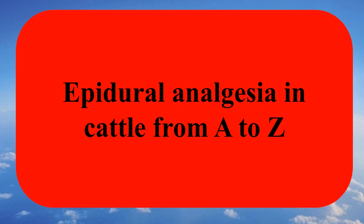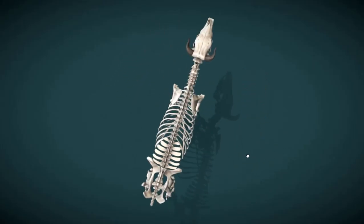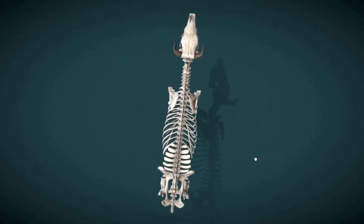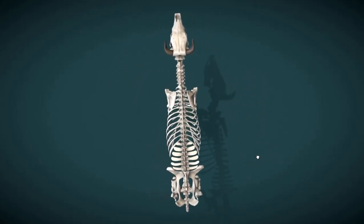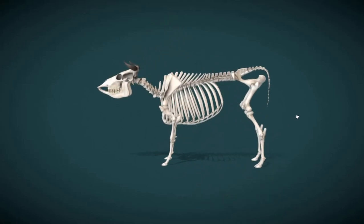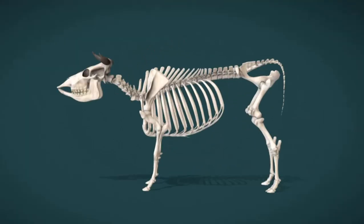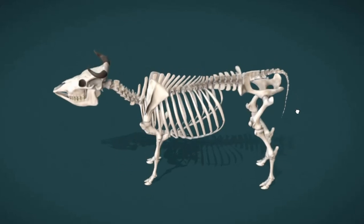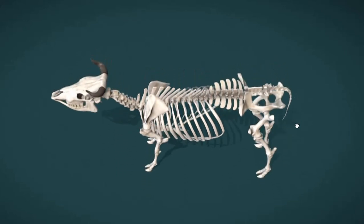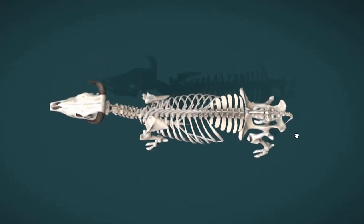Our topic today is epidural analgesia in cattle. At the beginning, we have to know about the anatomy of the vertebral column in cattle. The vertebral formula of the ox consists of seven cervical vertebrae, 13 thoracic, and 6 lumbar.